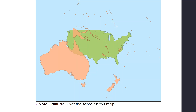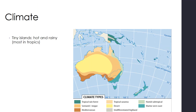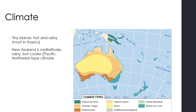I just want to point out climatically how the region is similar to the US, but note that the latitude is not the same on the map. This is in the southern hemisphere, so this is flopped up to kind of reflect that difference so we can get an idea next to the US. But a significant portion is much closer to the equator than the United States. We have a lot of tiny islands that are hot and rainy, mostly in the tropics. New Zealand is at a mid-latitude, which is rainy but cooler — kind of a Pacific Northwest type climate. Australia is mostly dry, with most of the population around the periphery. That outback, that center region, is mostly a desert, but it is rainier on the east coast due to prevailing winds.